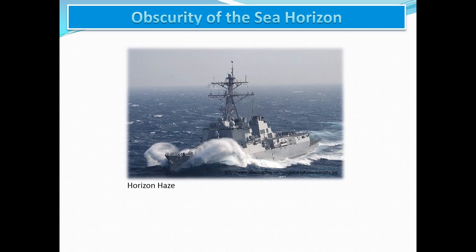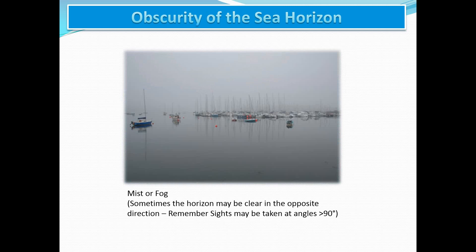The first limitation is obscurity of the sea horizon, which may be caused due to haze, fog, or mist. Fog, mist, or haze may obscure the horizon to the extent where it becomes impossible to take a sight. In other cases, the obscurity may only be slight. When this is the case, it may be possible to obtain better results by taking sights from a lower level than normal. When this is done, the distance to the sea horizon will be shortened and thus a clearer horizon may be obtained.